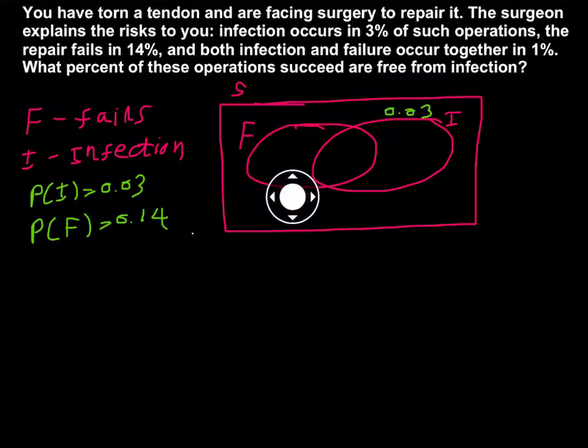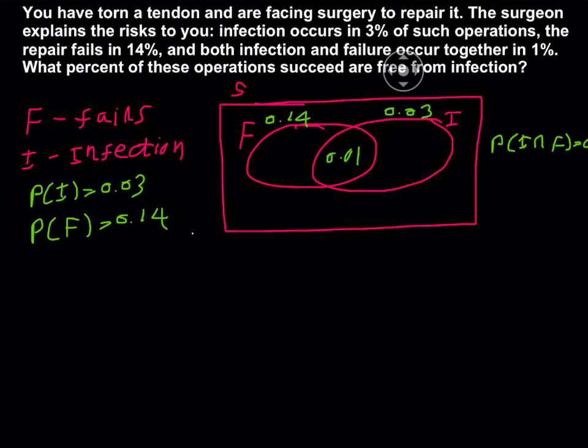That means in this area, the F circle represents the 0.14. So next, both infection and failure occur together 1%. It means if we use notations, we can write down probability I AND F equals 0.01.